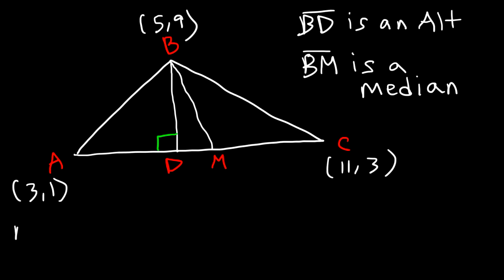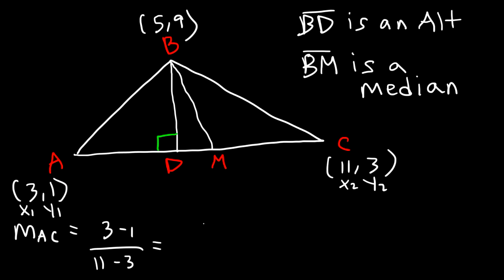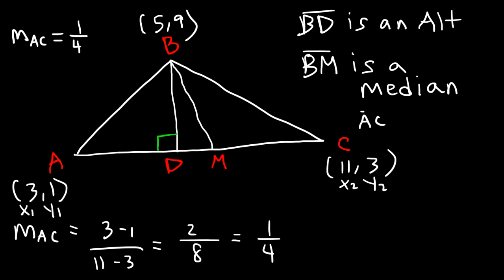Let's calculate the slope of line AC. Let A (3, 1) be (x1, y1) and C (11, 3) be (x2, y2). It's going to be y2 minus y1 divided by x2 minus x1: 3 minus 1 is 2, and 11 minus 3 is 8. 2 over 8 reduces to 1 over 4, so the slope of line AC is 1 over 4. Since AC is perpendicular to BD, the slope of BD is going to be negative 4 over 1, or simply negative 4.